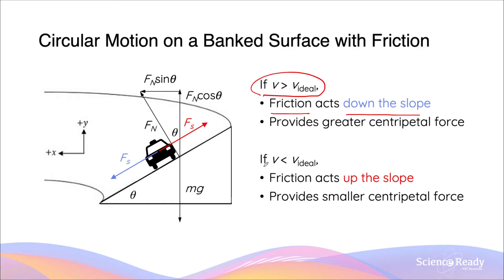In contrast, if the velocity of the vehicle slows down and becomes slower than the ideal velocity, then we need a smaller centripetal force to keep the object in the same circular motion. In this case, the static friction will actually act up the slope, to provide a smaller centripetal force and allowing a smaller velocity to be used in the same circular motion of the same radius.